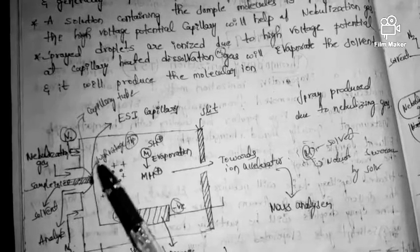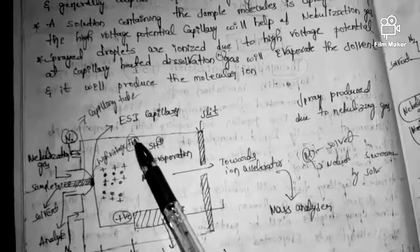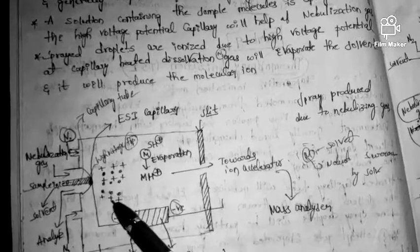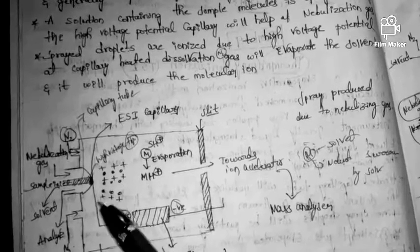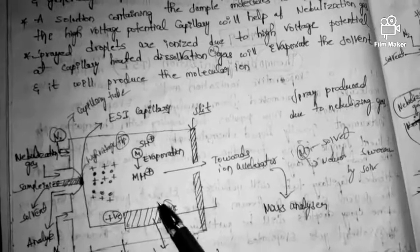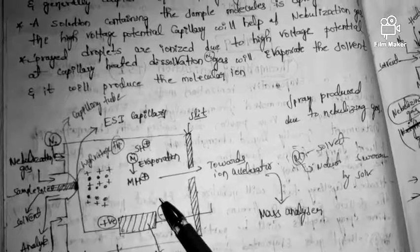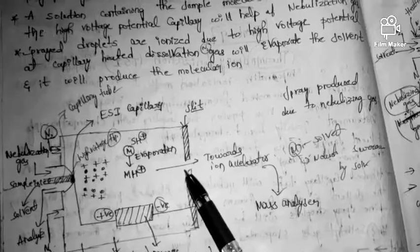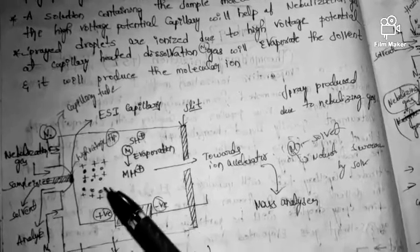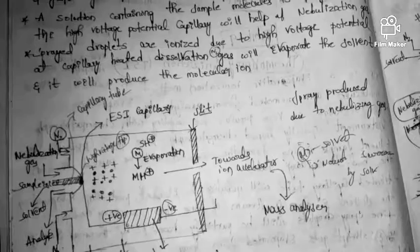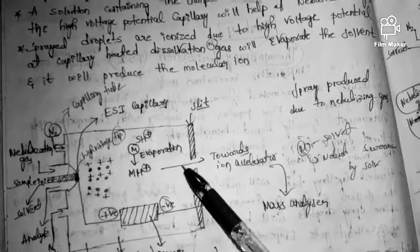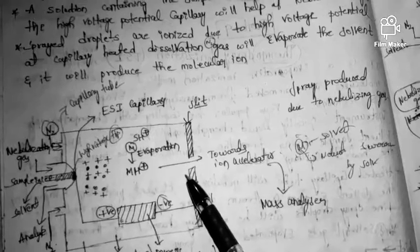The ionization occurs due to the high voltage potential at the capillary heated tip. A desolvation gas — mostly nitrogen gas — is present, which evaporates the solvent and produces molecular ions.